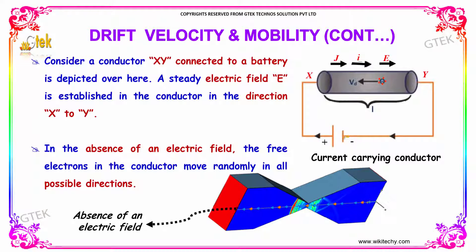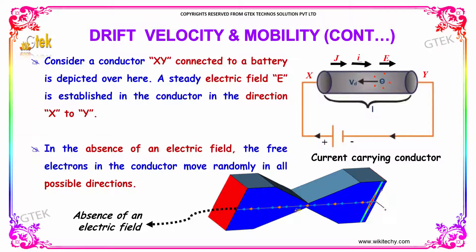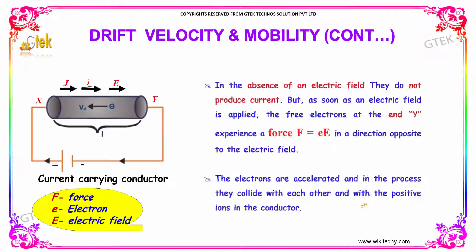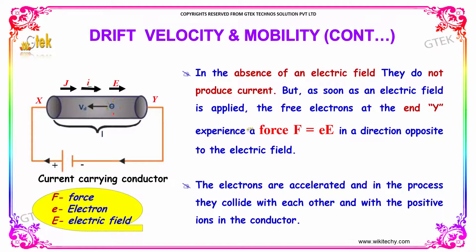In the absence of an electric field, the free electrons move randomly in all possible directions, as you can see here. In the absence of an electric field, they do not produce any current.